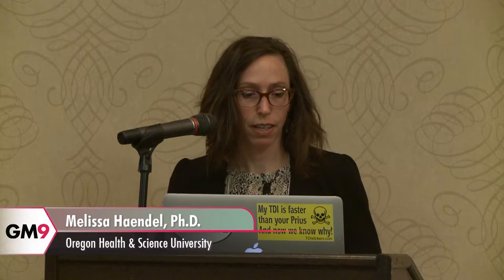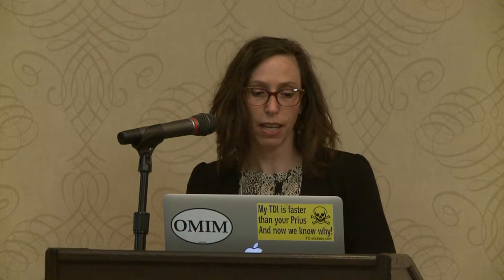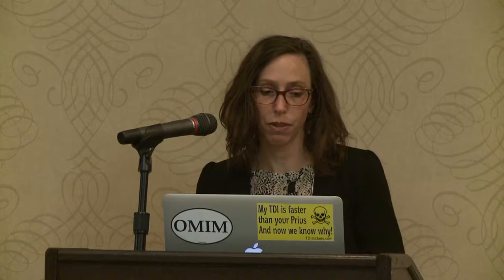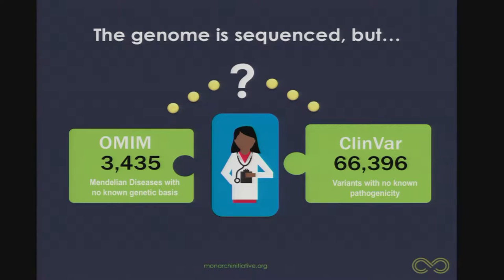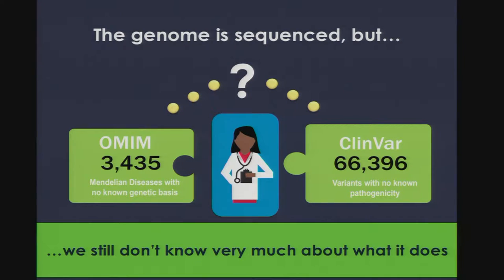I just did a back-of-the-envelope count the other day, and in OMIM right now we have more than 3,000 Mendelian diseases that don't have a genetic basis, and in ClinVar we have 66,000 variants with no known pathogenicity assigned to them. This is just the things that have been recorded in these repositories — we know there are so very many more. So we know a lot about the genome, but we still don't know very much about what it does.